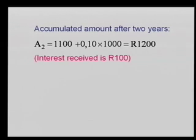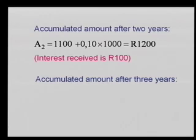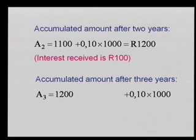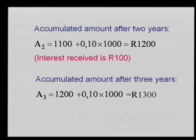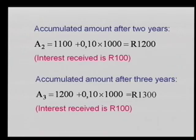After two years, the interest received is 100 Rand, giving an accumulated amount of 1,200. After three years, 1,200 plus 10% of 1,000 gives us 1,300. The interest received is 100 Rand — as this is simple interest, the amount must be fixed. Notice that in the second year the interest is worked out on the original amount, not the accumulated amount. For simple interest, it is always the original amount, and the interest grew again by 100 Rand, the same as the first year.